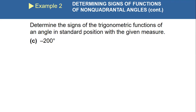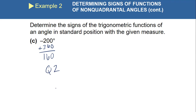For negative 200 degrees, we need to make it positive by finding its coterminal angle. We add 360: −200 + 360 = 160 degrees. That puts us in quadrant two. In quadrant two, what is positive? Only sine θ and cosecant θ are positive.